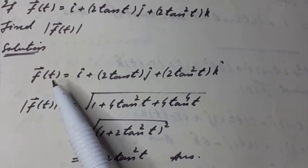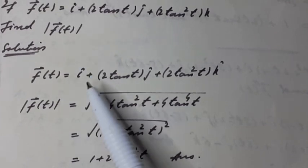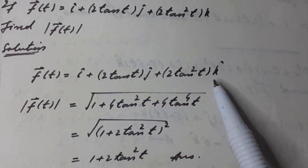Solution. Here the vector function f(t) of a scalar variable t is equal to i unit vector plus 2 tangent t j unit vector plus 2 tangent square t k unit vector.